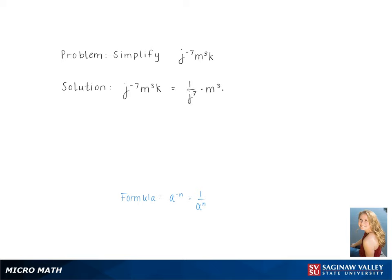So we multiply 1 over j to the 7th times m to the 3rd times k. Simplifying this gives us m to the 3rd k over j to the 7th, which is our final answer.